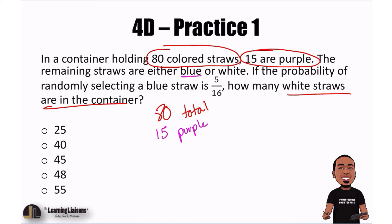And then the remaining are blue or white. So I'll just use black for the rest. Blank or blue. Blank or white. So again, we're looking for the white ones. We're looking for white. So it looks like if we can find out how many blue there are, then we can find out how many white there are. So let's get it done.